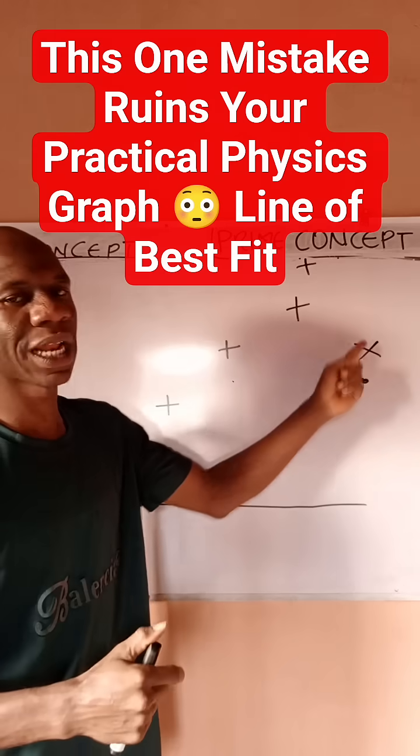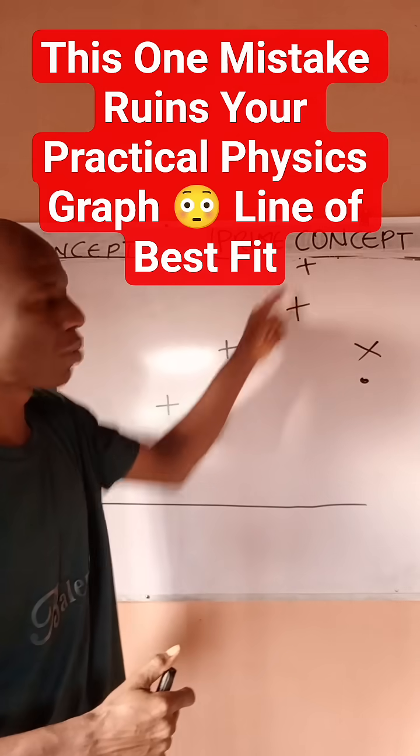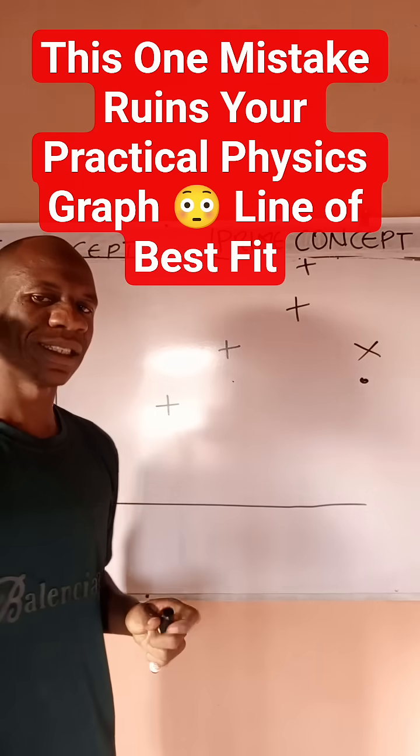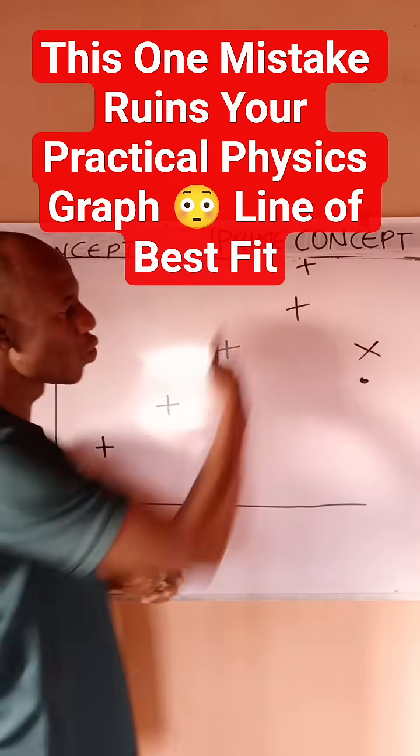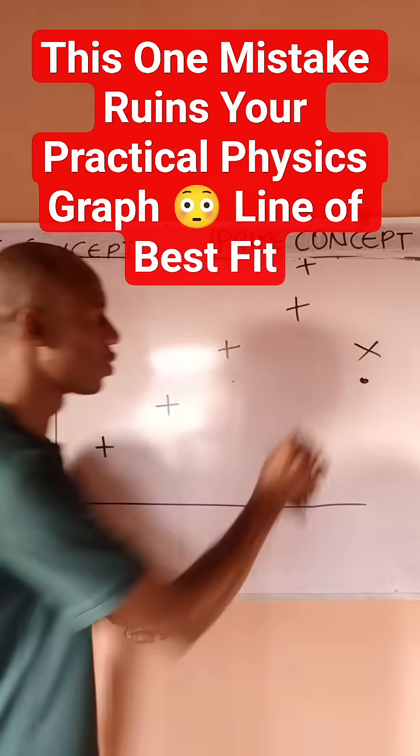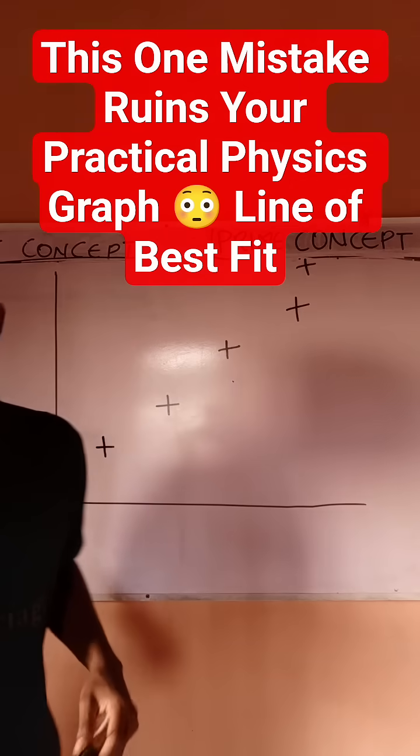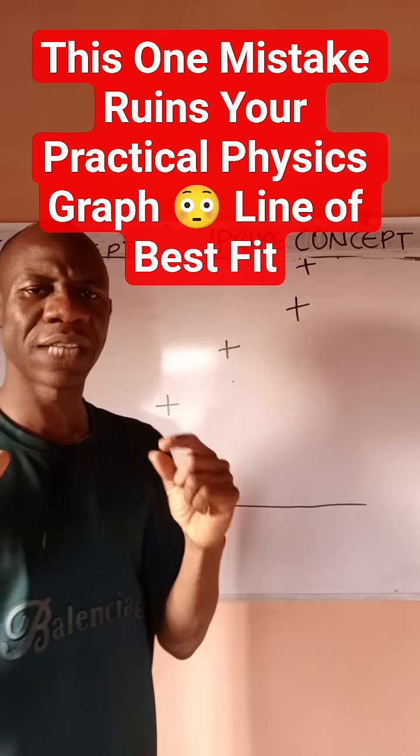We shouldn't use something like this. It is preferred to use plus signs as they would indicate where your line of best fit goes to. So quickly, how do we draw a line of best fit? A line of best